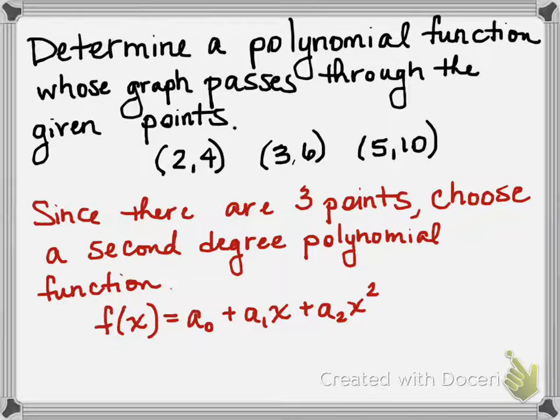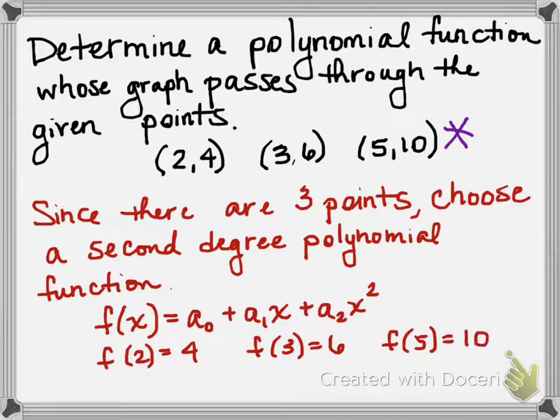Here's what a second degree polynomial looks like. And we also want to guarantee that the graph of this polynomial goes through these three points. For our purposes, algebraically, that means that f(2) = 4, f(3) = 6, and f(5) = 10.